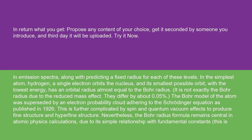In emission spectra, along with predicting a fixed radius for each of these levels. In the simplest atom, hydrogen, a single electron orbits the nucleus, and its smallest possible orbit, with the lowest energy, has an orbital radius almost equal to the Bohr radius.